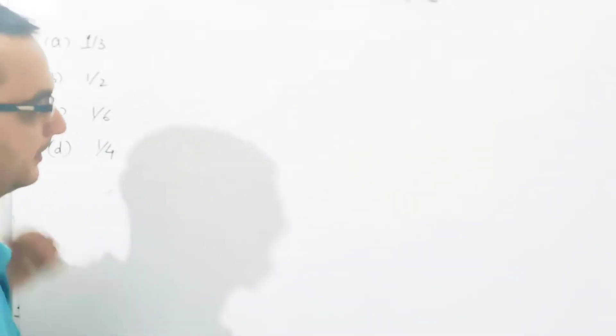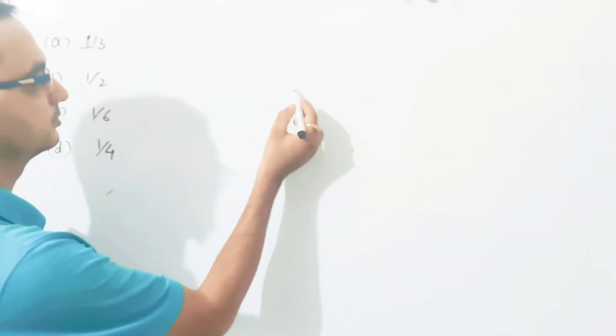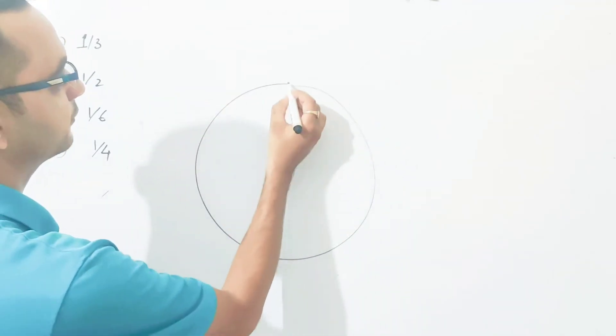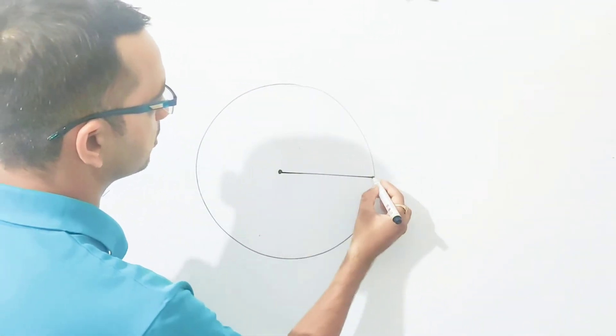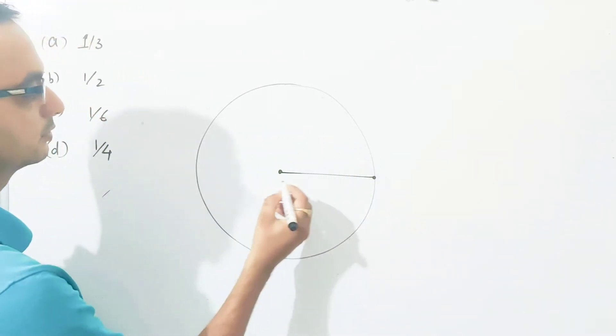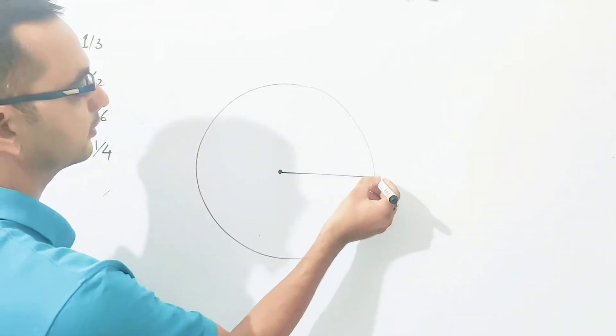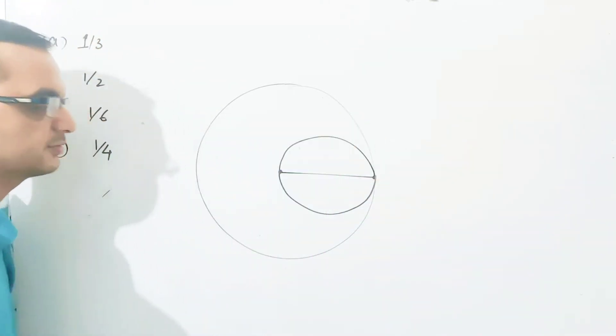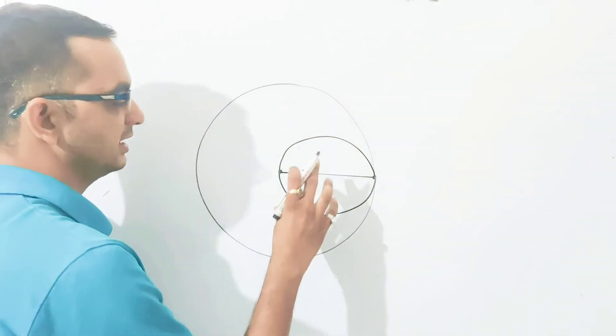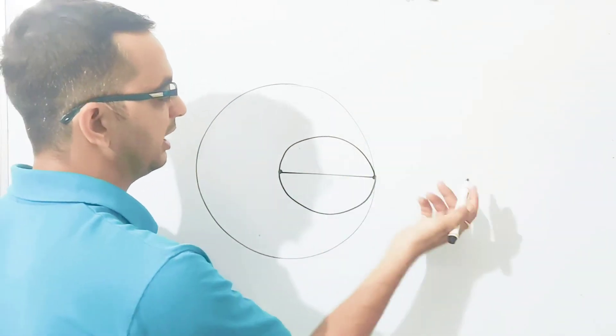So students, what the question is saying: we have a large disc of radius 2R and we have scooped out a disc of radius R. The circumferences coincide in the same way, so we can say that this disc we have removed from the inside.